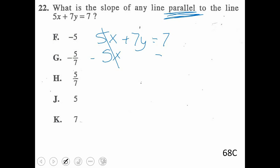So we'd have 7y equals negative 5x plus 7. Divide that by 7. Divide that by 7. So our current slope is negative 5 over 7. Again, parallel means it's going to be the same slope. So if we keep it the same, that's going to make that G.